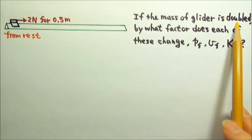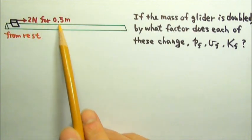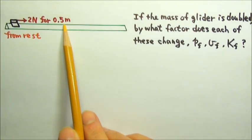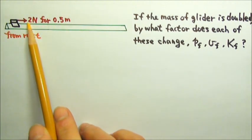When the mass is doubled, the force and the distance traveled stay the same. That means the work done by the force stays the same.